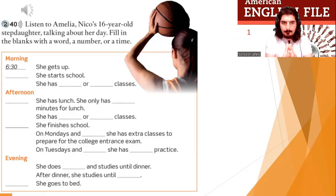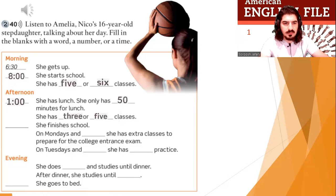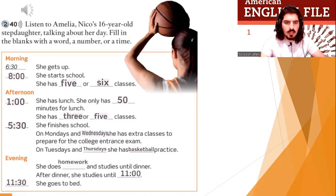Let's check. She gets up at 6:30. At eight she starts school and has five or six classes. At 1 p.m. she has lunch — only 50 minutes. She has three to five classes in the afternoon. At 5:30 she finishes school. On Mondays and Wednesdays she has extra classes; on Tuesdays and Thursdays she has basketball practice. In the evening she does homework and studies until dinner. After dinner she studies until 11, and at 11:30 she goes to bed.